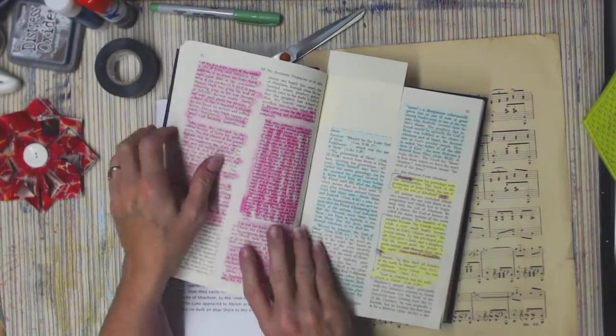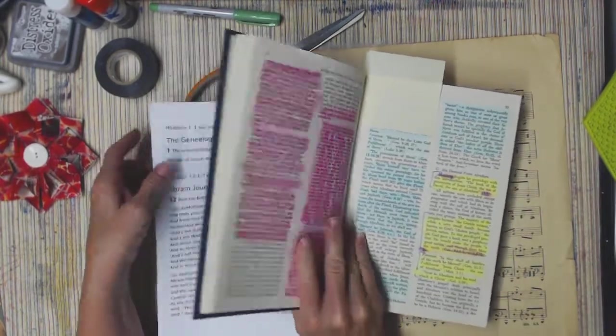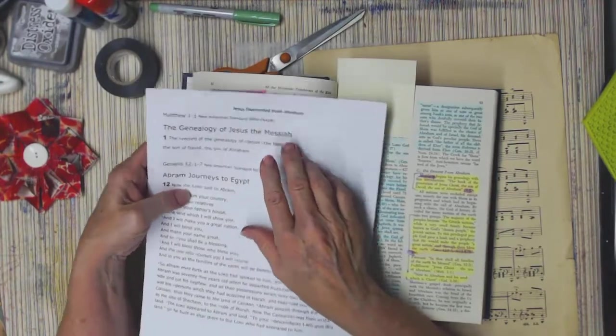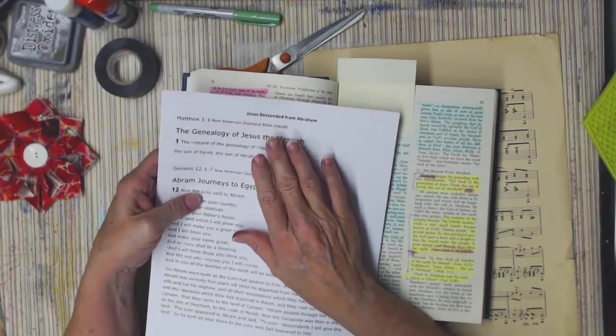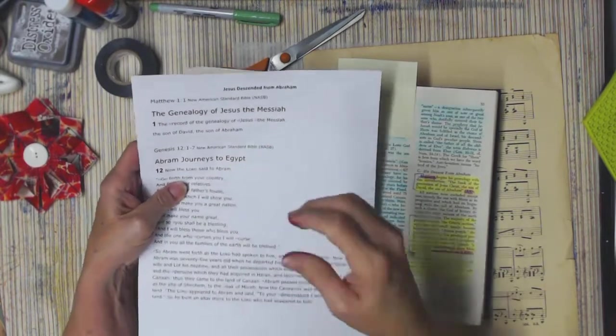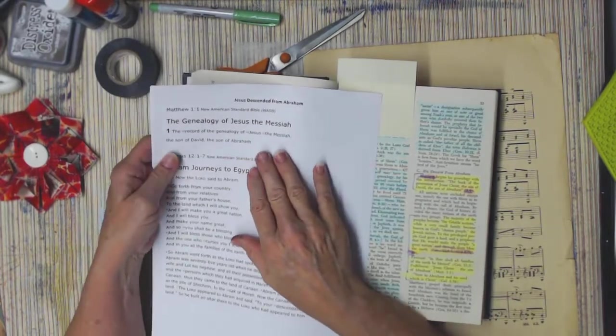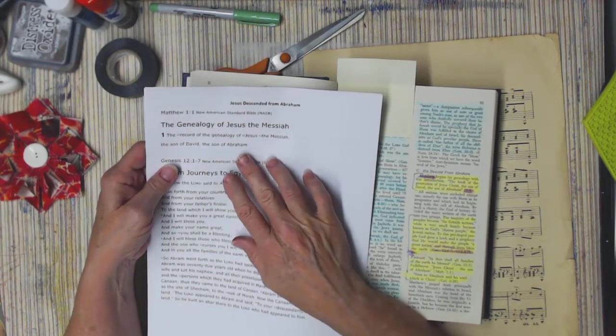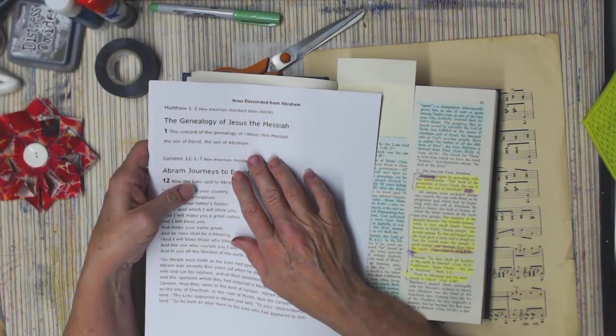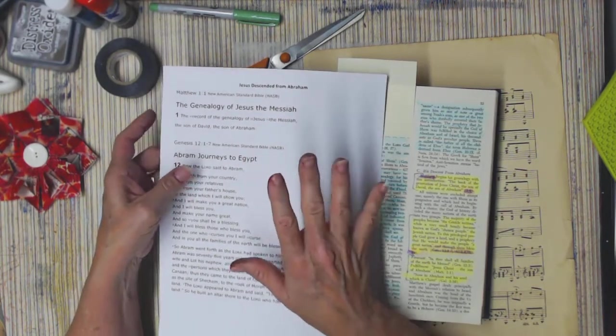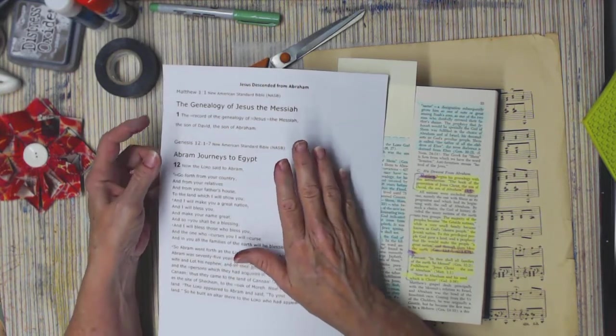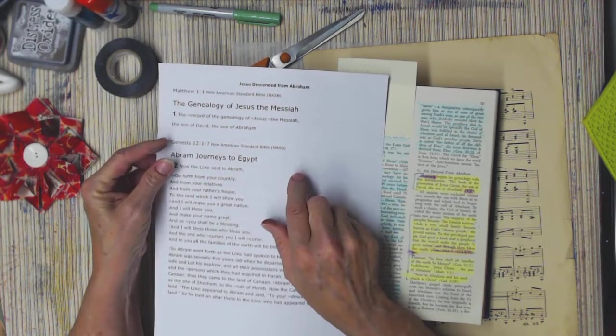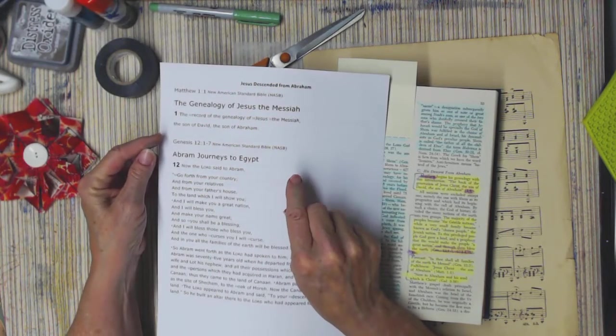Matthew begins his genealogy with the introduction, and this is the New American Standard Bible that my verses came out of this week. It says, the record of the genealogy of Jesus the Messiah, the son of David, the son of Abraham. So, the majority of the peoples of the world became known as the Gentile nations, while a very small family became known as God's chosen people, the Jewish nation.